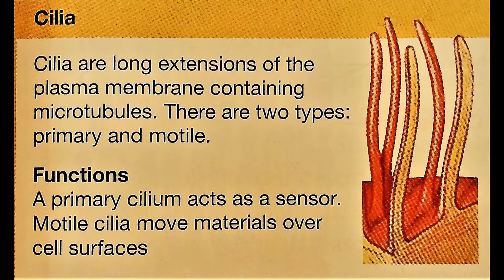Cilia are even longer than microvilli. Cilia are long extensions of the plasma membrane containing microtubules. There are two types: primary and motile. Primary cilia act as a sensor, while motile cilia move materials over a cell surface.